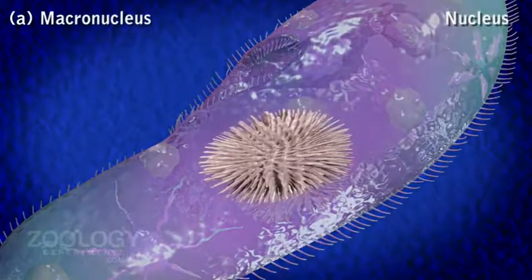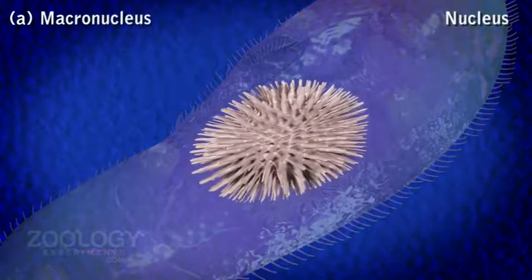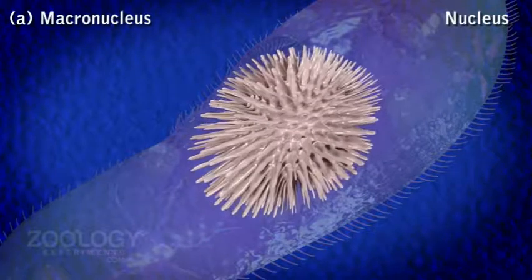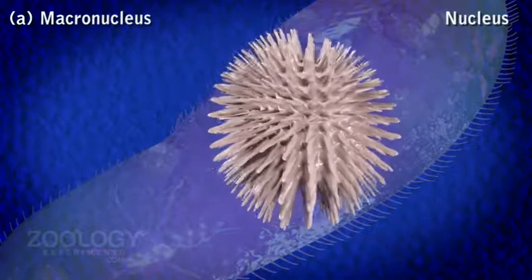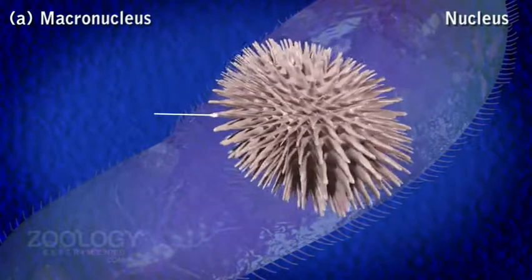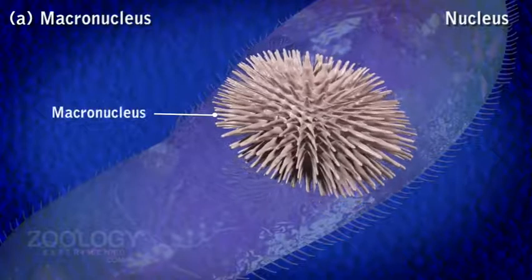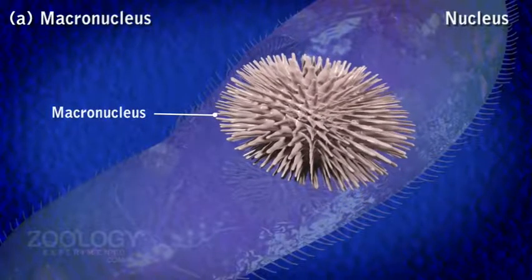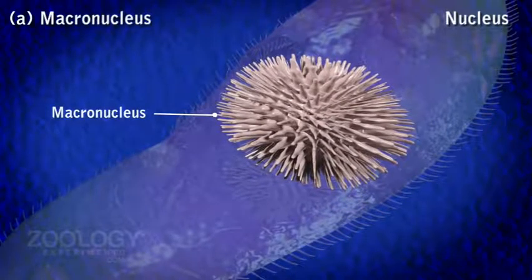The macronucleus is roughly kidney-shaped with an ordinary nuclear membrane. It is polyploid and possesses many nucleoli and much more chromatin material, i.e., DNA.